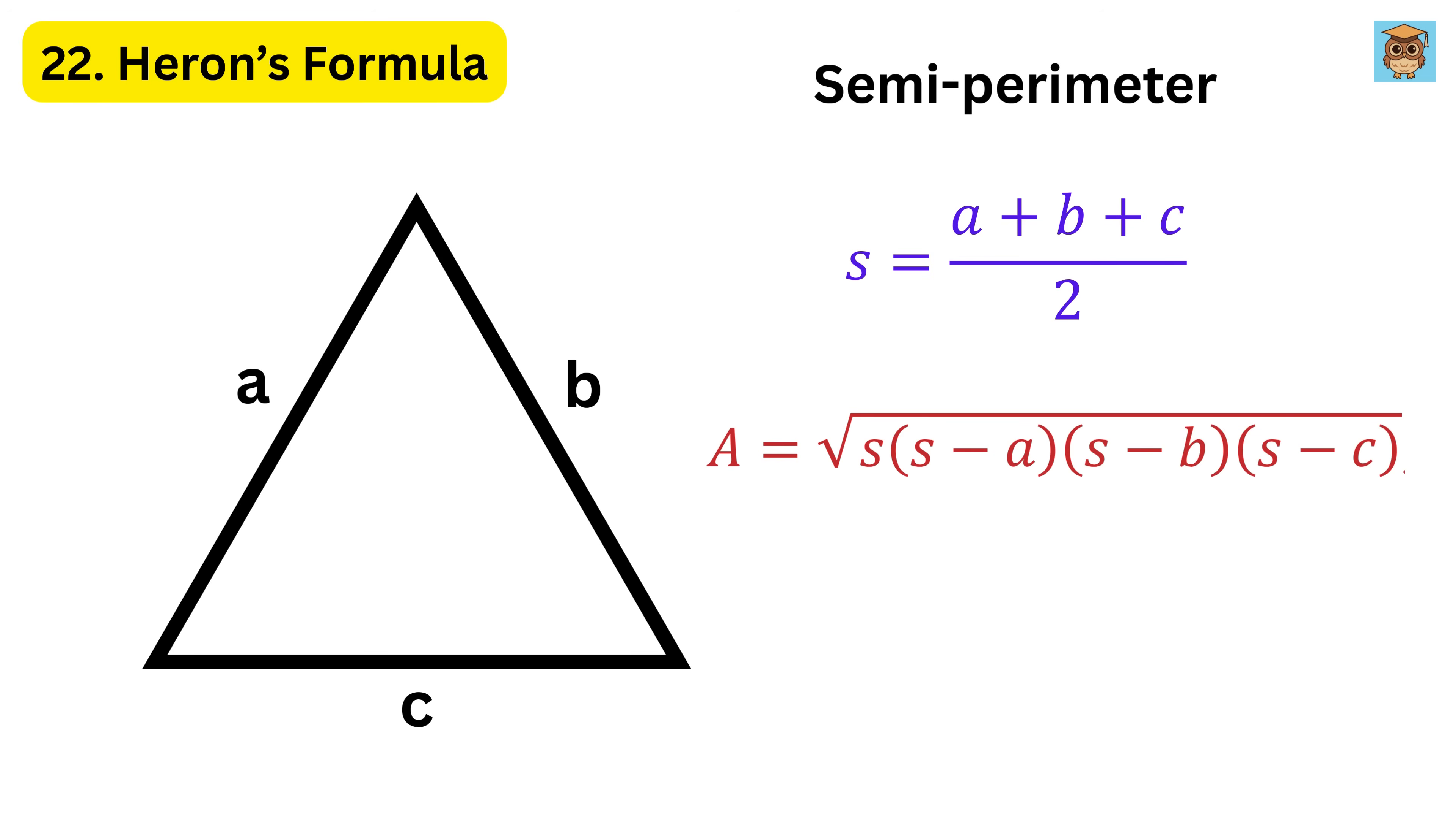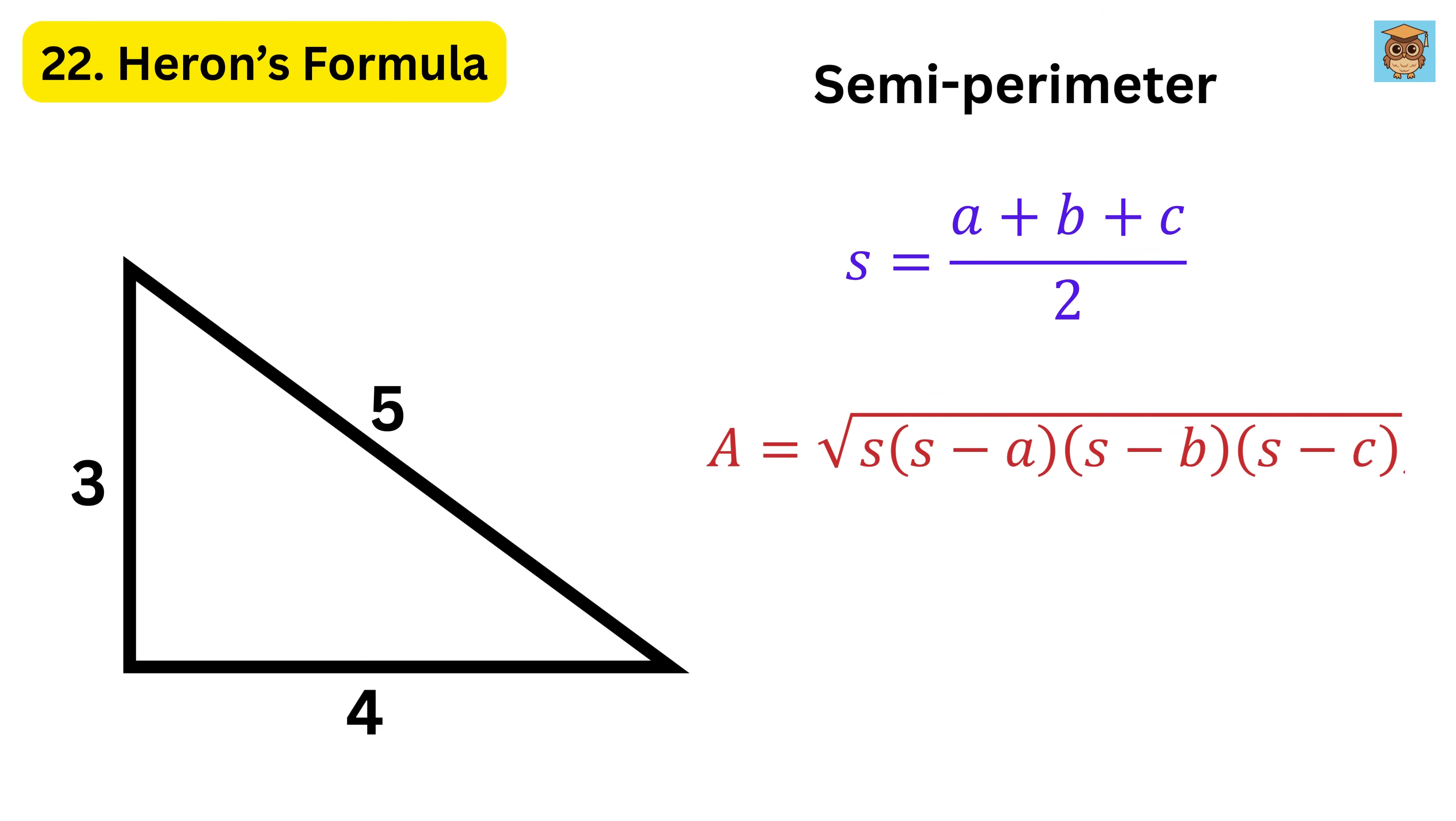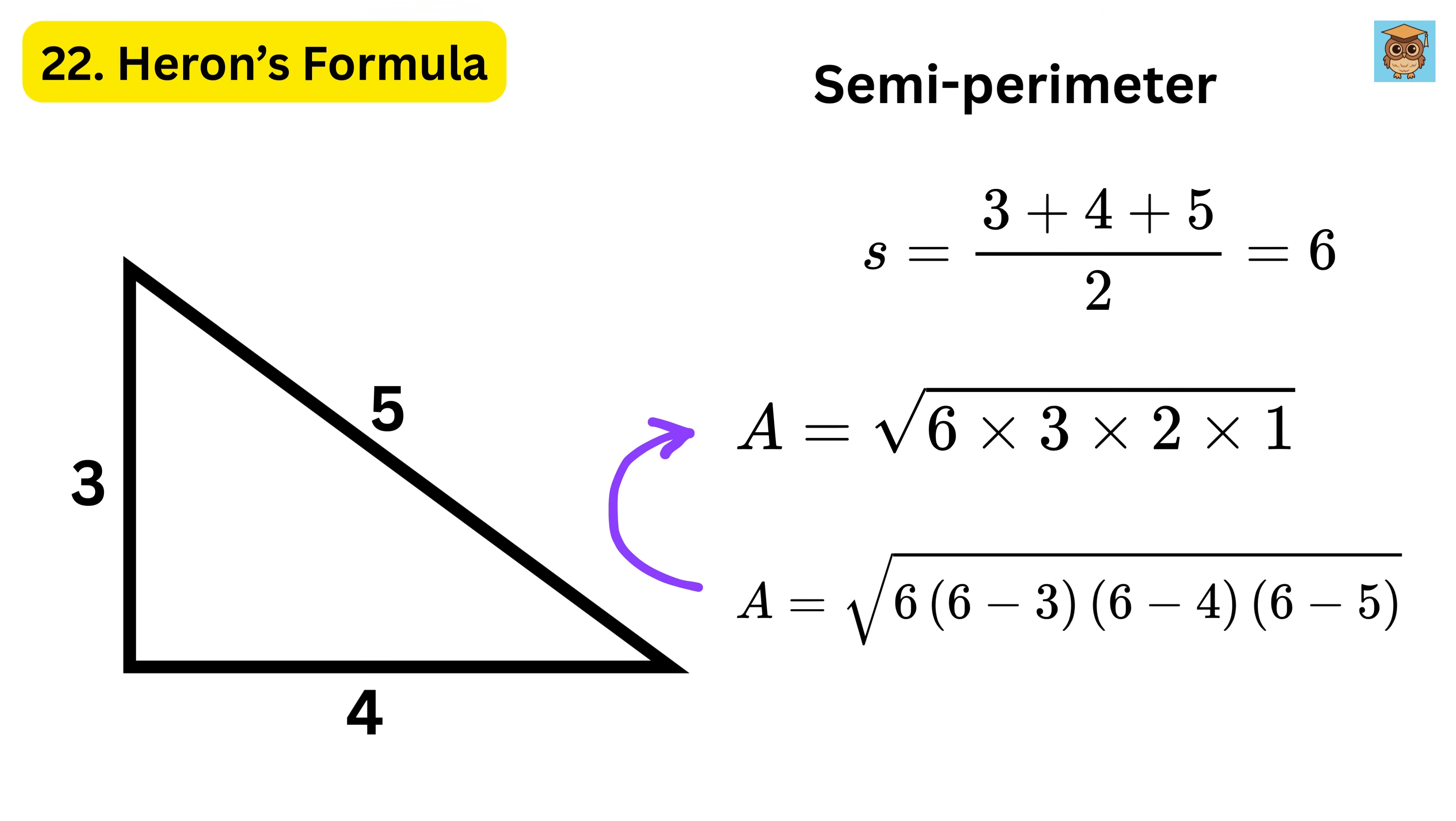It works like a magic recipe for any triangle no matter the shape. For example, take a triangle with sides 3, 4, and 5. First, find the semi-perimeter. 3 plus 4 plus 5 is 12. Divided by 2 gives 6. Now, apply the formula. Area is square root of 6 times 6 minus 3 times 6 minus 4 times 6 minus 5. This simplifies to square root of 6 times 3 times 2 times 1, which is square root of 36, giving an area of 6 square units.